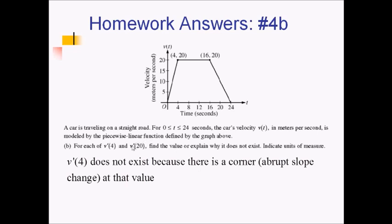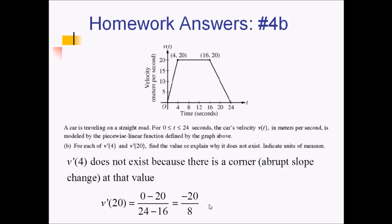For v prime of 20, t equals 20 lies in the middle of a linear piece. Using the slope formula with the two endpoints of that segment: zero minus twenty over twenty-four minus sixteen gives negative twenty over eight, which simplifies to negative 2.5. With units, that's negative 2.5 meters per second squared.